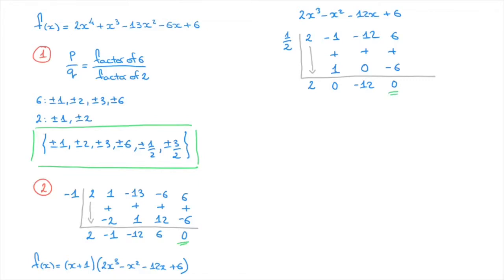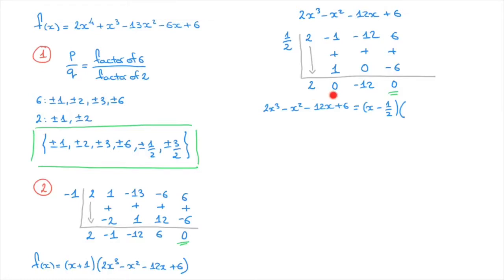Since the remainder is 0, we've found another zero: 1/2 is a zero of this polynomial. The factor theorem lets us rewrite the cubic 2x³ - x² - 12x + 6 as (x - 1/2) times the quotient polynomial. The quotient is a quadratic whose coefficients are the first three numbers at the bottom of the table: 2x² + 0x - 12.